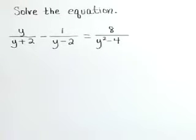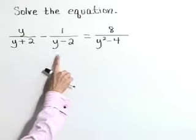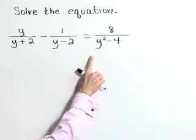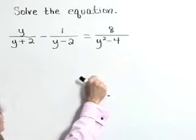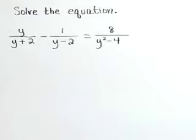Solve the equation: y over y plus 2, minus 1 over y minus 2, is equal to 8 over y squared minus 4.